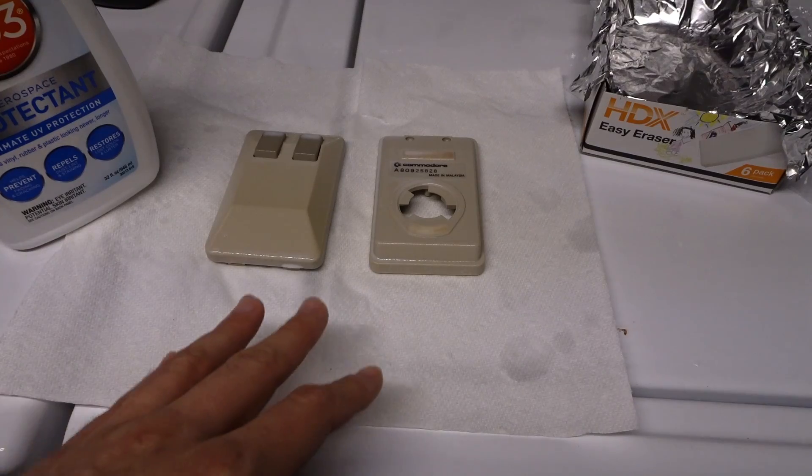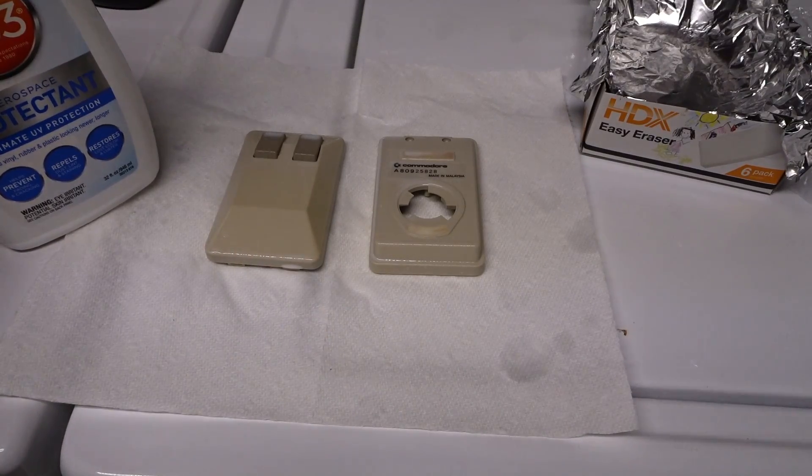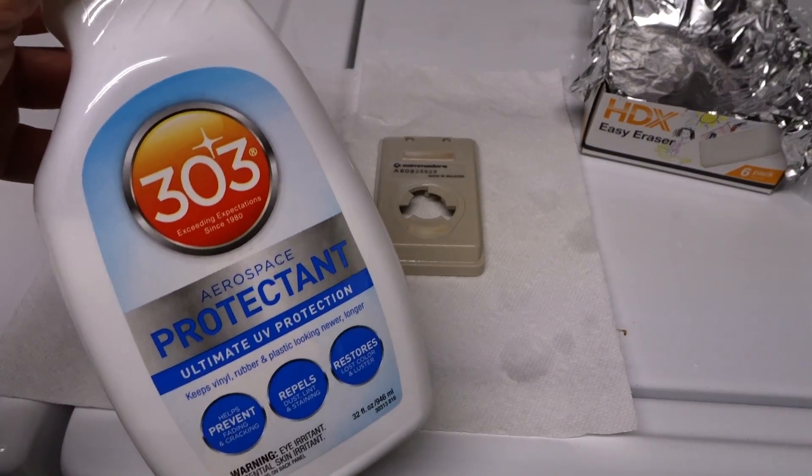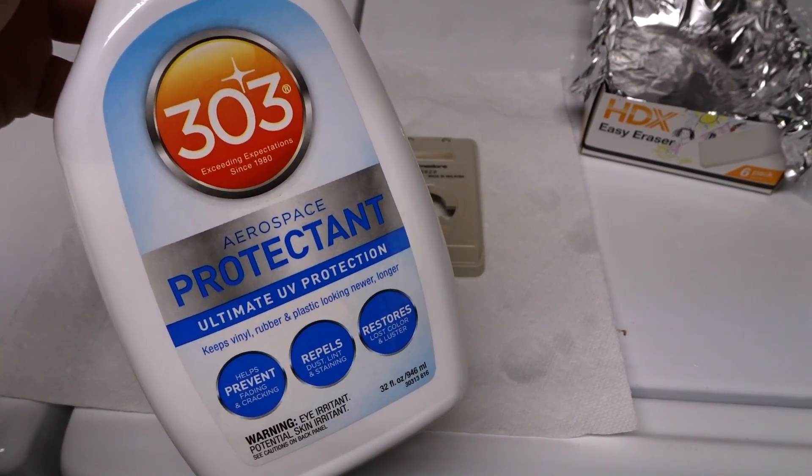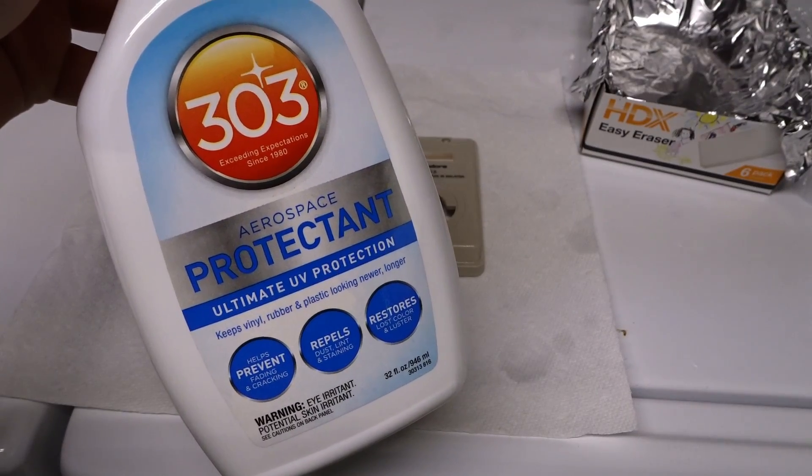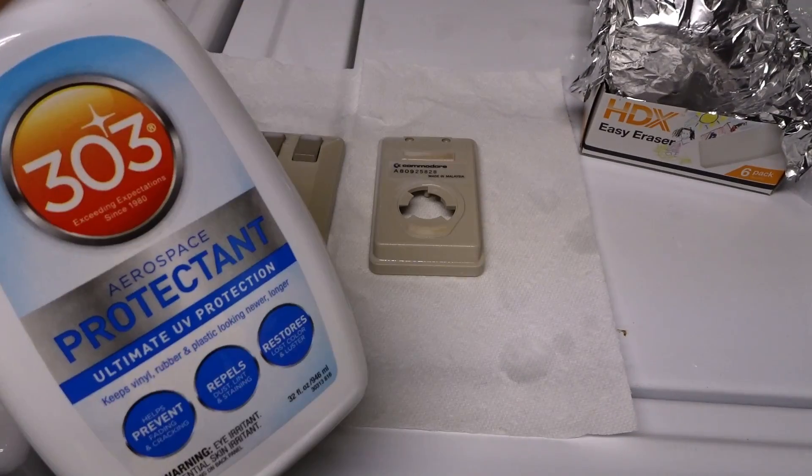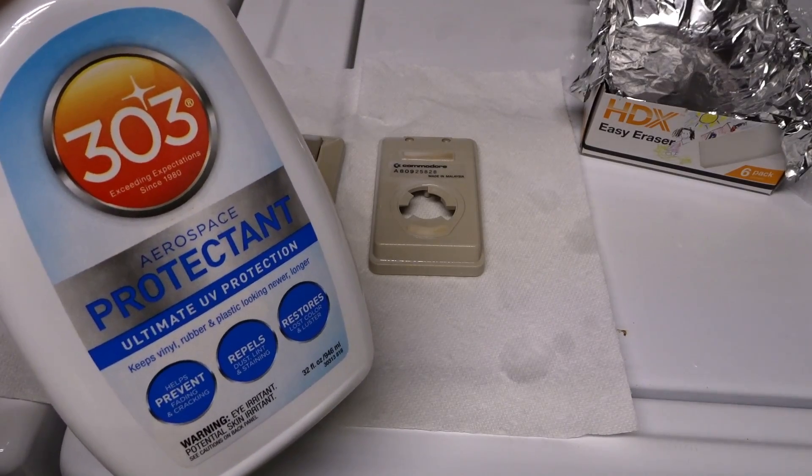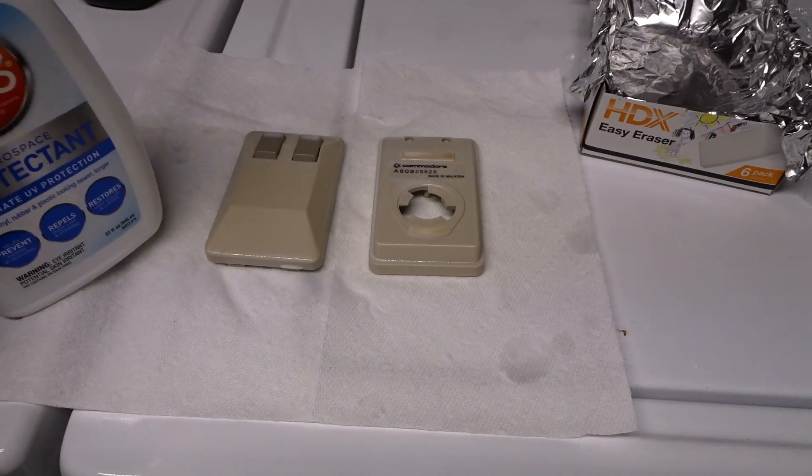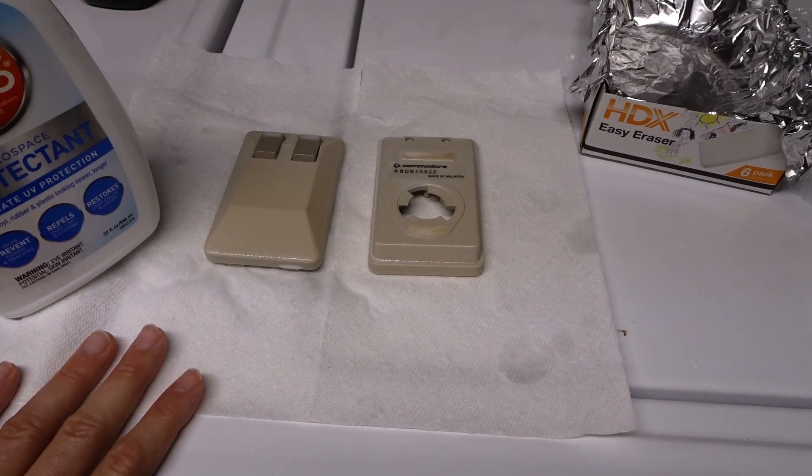I just dried these off, I stuck them on a paper towel here and I liberally sprayed them with this 303 UV protectant. My friend who's a car detailer swears by this stuff and I apply it post-retrobrite to all of my plastics. I have a feeling, and this is not scientific, this is just anecdotal, that applying this may help plastics from re-yellowing.